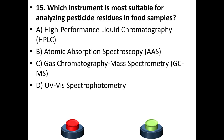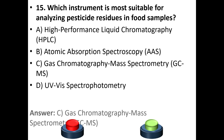Fifteenth question: Which instrument is most suitable for analyzing pesticide residues in food analysis? A. HPLC. B. AAS. C. GC-MS. D. UV spectrophotometry. Your answer is the most sensitive one, option C: GC-MS.